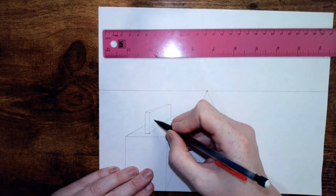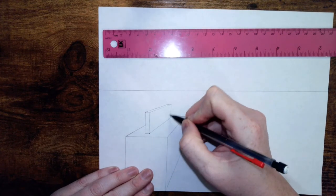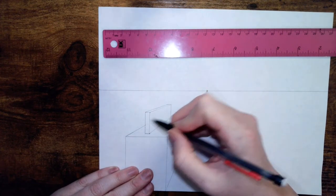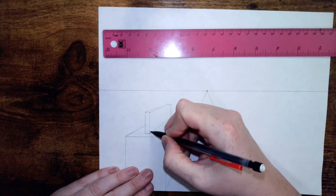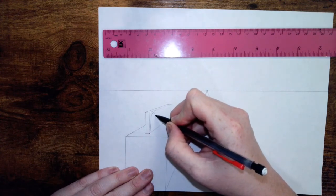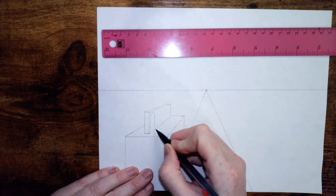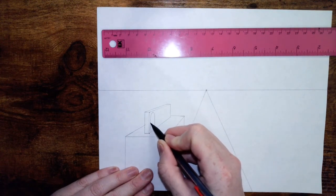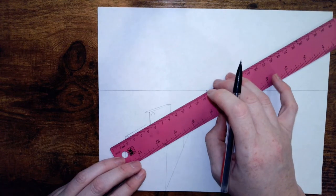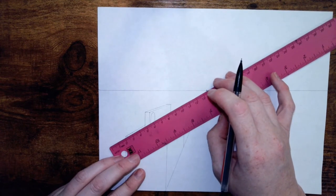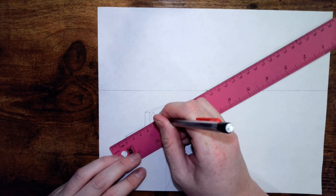To write things in perspective, say you wanted to write the word art on top of this building. Make sure you go from top to bottom and you stop before you get to the edge. And this letter should go back to the vanishing point as well.